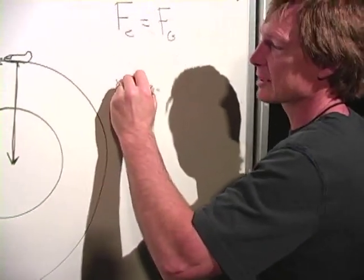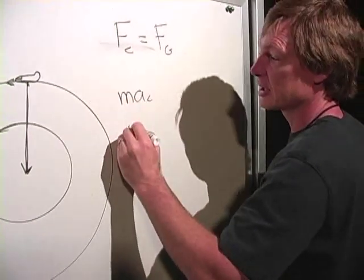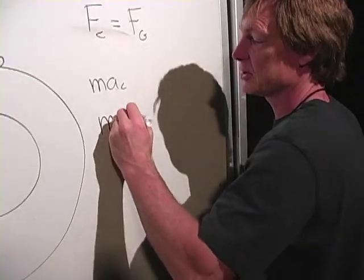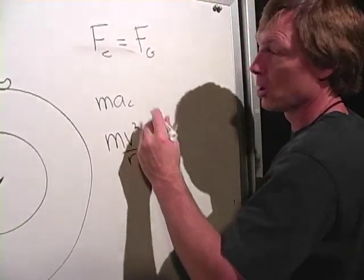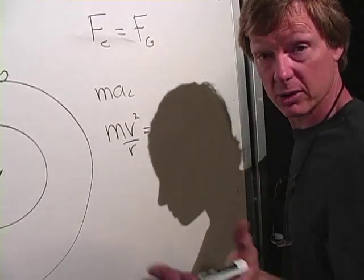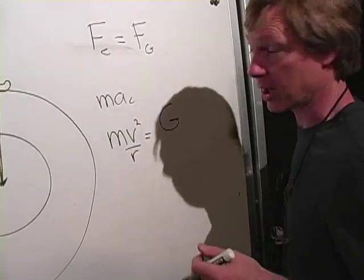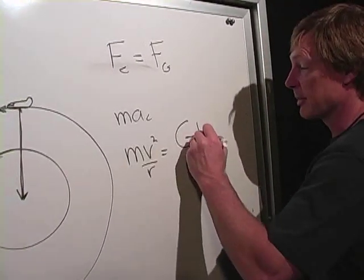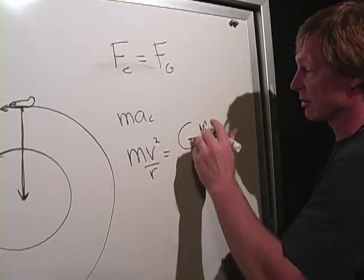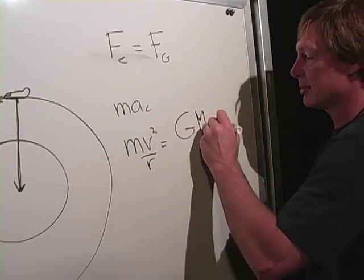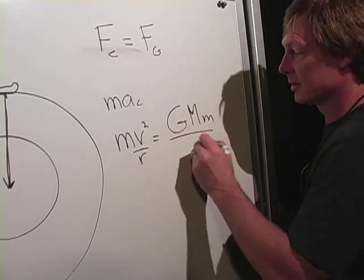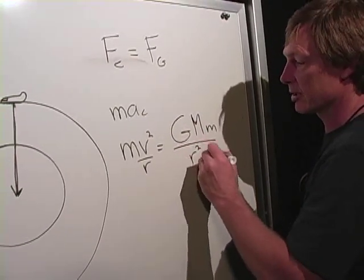We know that mass times centripetal acceleration, that's mass times v squared over r. Gravitational force is Newton's universal gravitational constant times the mass of the big object, in this case the Earth, the big mass, times the mass of the object in orbit divided by the radius squared of the orbit.